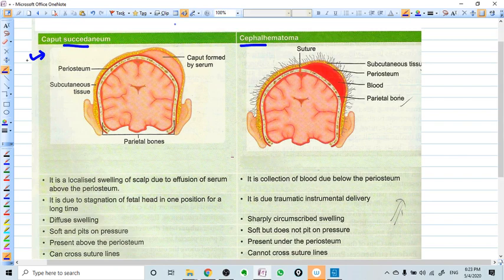So by definition, what is caput succedaneum? It is a localized swelling of the scalp due to effusion of serum above the periosteum. So this is the brain tissue here, this is the brain tissue, and this is the cranium, osteocranium.